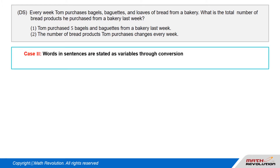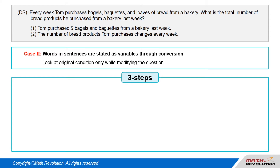Solution. Now we will solve this DS question using the variable approach. When words and sentences are stated as variables through conversion, the most important point is to look at the original condition only while modifying the question. Let's apply the three steps suggested previously.